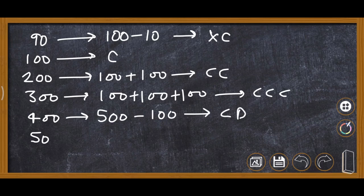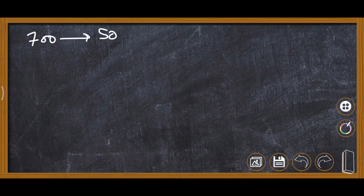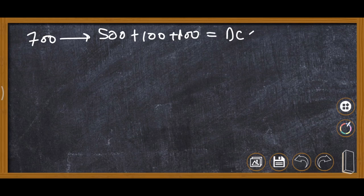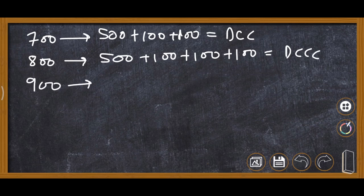500 is written as D. 600 is 500 plus 100, written as DC. 700 is 500 plus 100 plus 100, written as DCC. 800 is 500 plus 100 plus 100 plus 100, written as DCCC. For 900, we cannot take 100 four times, so we write 1000 minus 100, which gives CM.